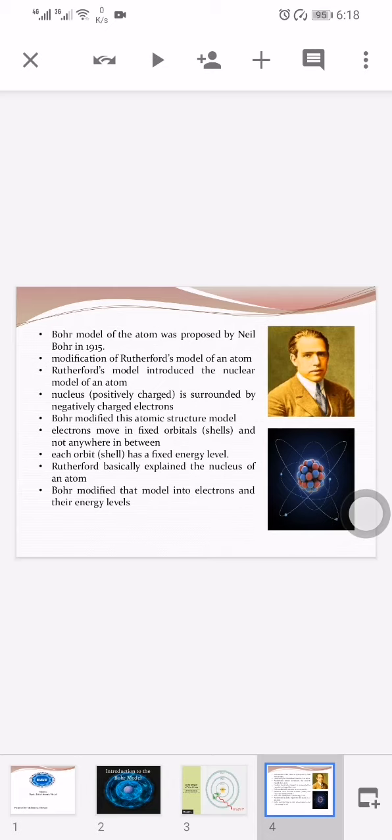Bohr modified this atomic structure model by explaining that electrons move in fixed orbitals or shells and not anywhere in between, and he also explained that each orbital has a fixed energy level. Rutherford basically explained the nucleus of an atom and Bohr modified that model into electrons and energy levels.